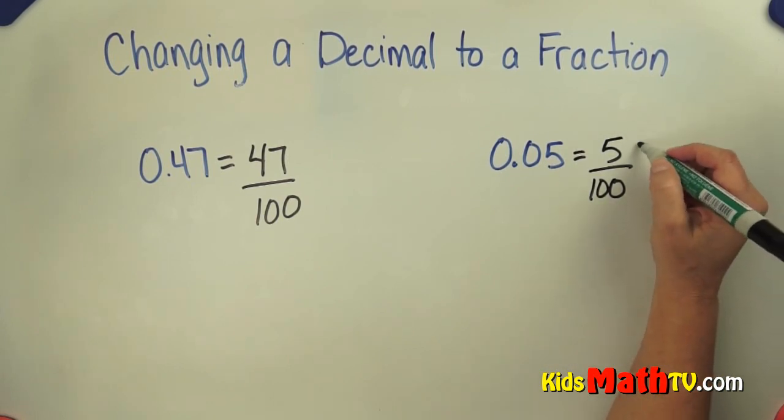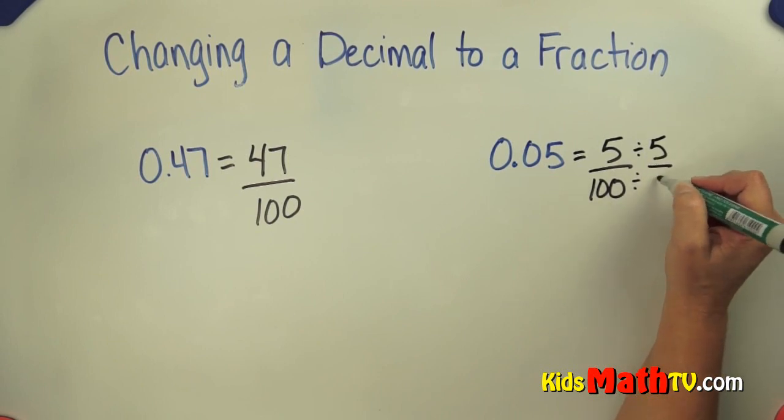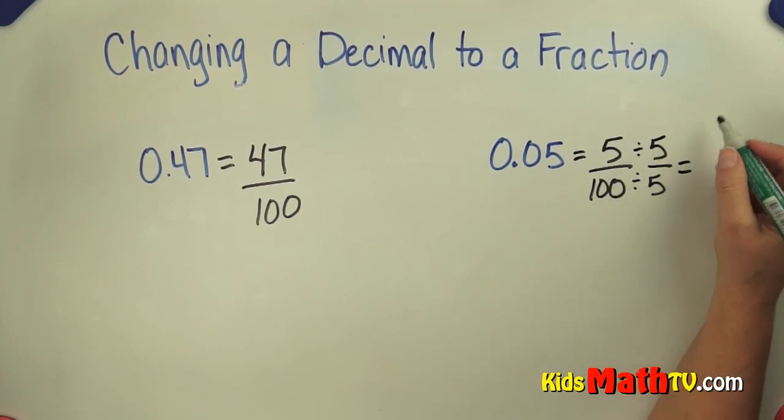In this case, we can simplify this. We can divide both the numerator and the denominator by 5, so divide by 5 over 5, and we get 5 divided by 5 is 1, 100 divided by 5 is 20.